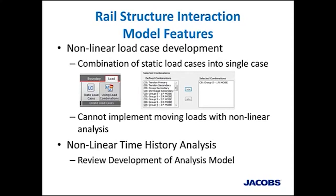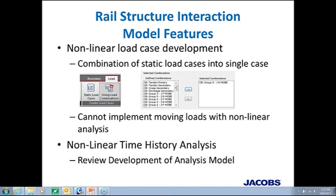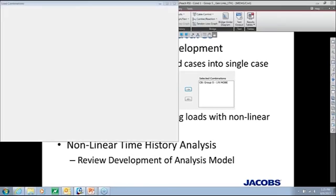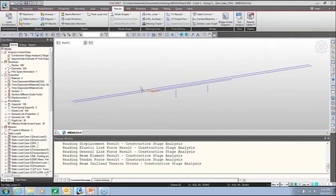The final step of model development, especially for seismic, was the time history analysis. Now I'm going to switch over to our model for this bridge and show some of the features just discussed. The first steps are how to define the multilinear elastic link and the general link.